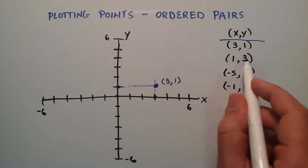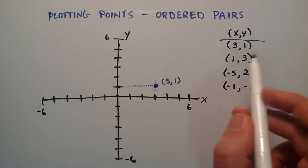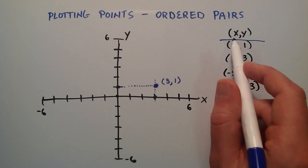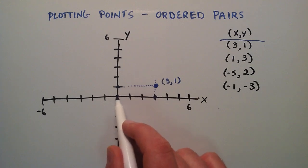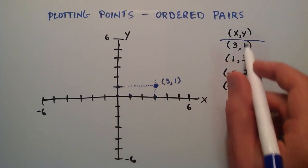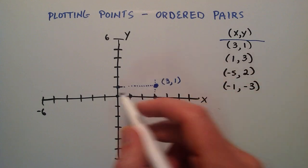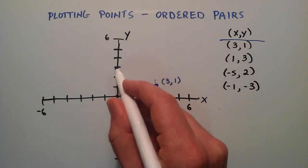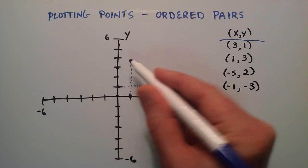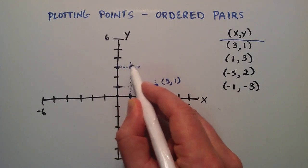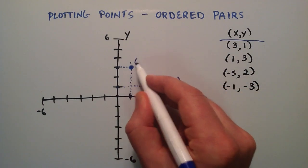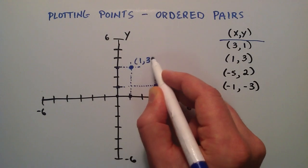Now let's look at 1, 3. It's really the same information except we've switched the X and Y values. When our X component is 1, we go over from the origin 1 unit in the X direction. And our Y component is 3, so we go up 3 units in the Y direction. Then we just draw our projections, and where these two projections cross is our point represented by the ordered pair 1, 3.